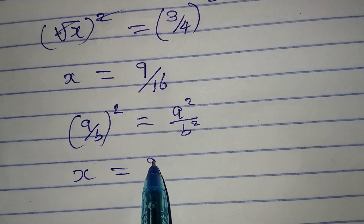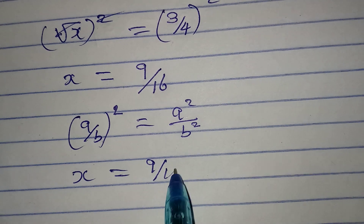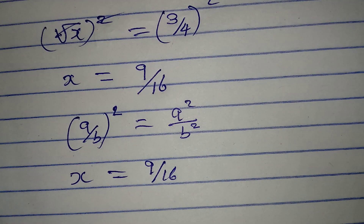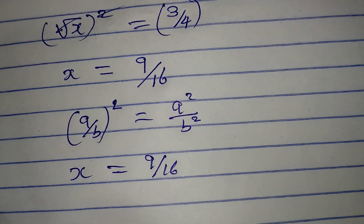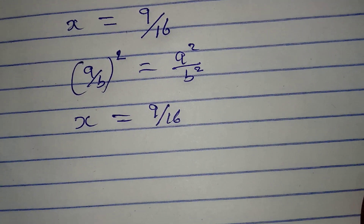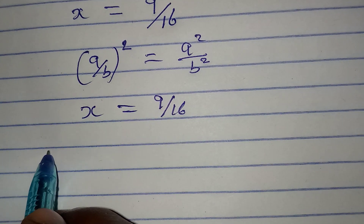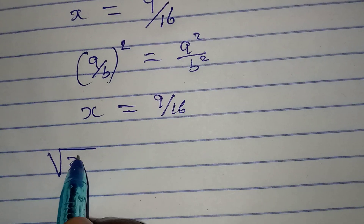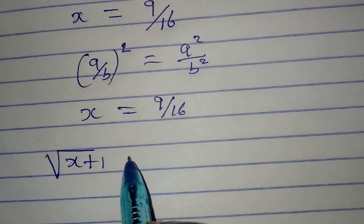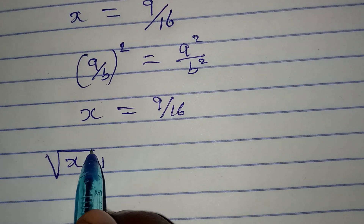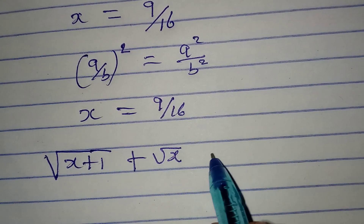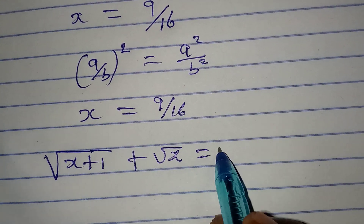So x equals 9 over 16. But let's go back and check to see if we are right or wrong. The original equation is square root of x plus 1, plus square root of x, equals 2.